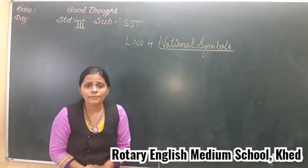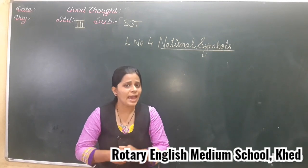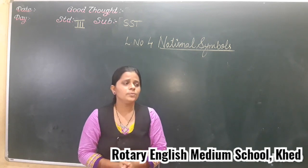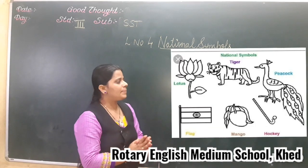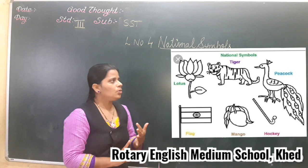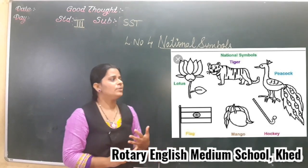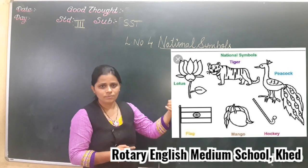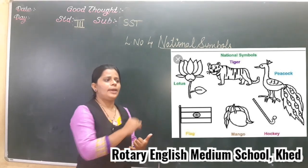Now my dear children, what you have to do? Today, as I said in the last video, we are going to do an activity. Are you ready for your activity? You have to make a collage by collecting pictures of the national symbols. You can draw or you can stick the picture of the national symbol — for example, national animal, that is tiger. You can draw the picture or you can stick the picture.